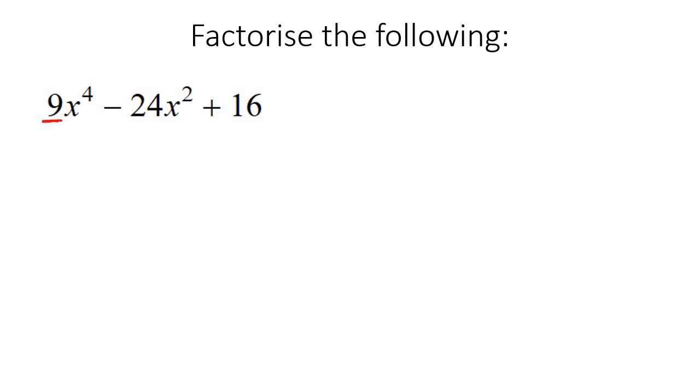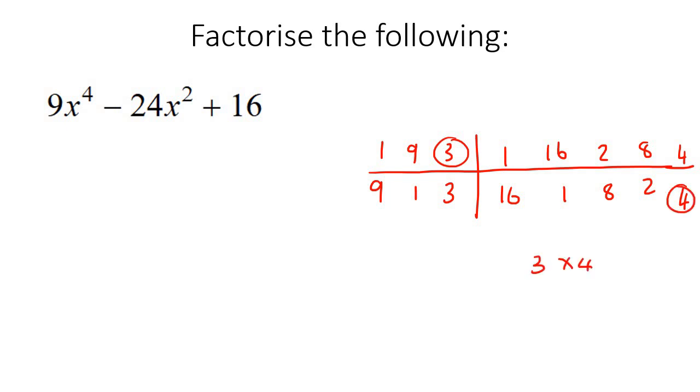So because this number in the front cannot be removed, we have to use that technique that I showed you a while back. So 1 times 9, 9 times 1, and then 3 times 3. And then for 16, you'd say 1 times 16, 16 times 1, 2 times 8, 8 times 2, and 4 times 4. So now remember, what we need to do is we need to choose a number over here and a number over here. So we're trying to get to negative 24. So trust me, you'll get really good at this. Like, there we go, I've already found it. Check here. 3 times 4, 4 times 4, which is 12. And then you obviously choose the opposite. So that's going to be 4 times 3. And that's also 12. So then 12 and 12, well, if you want to make negative 24, you're just going to say minus 12, minus 12. So we're good.